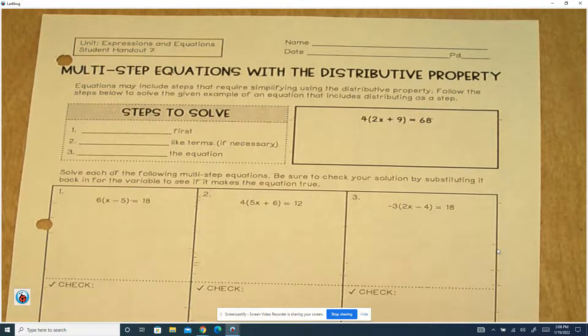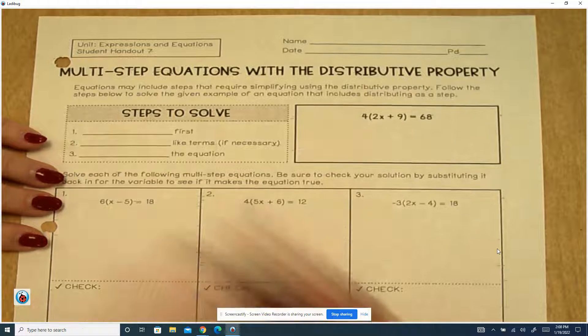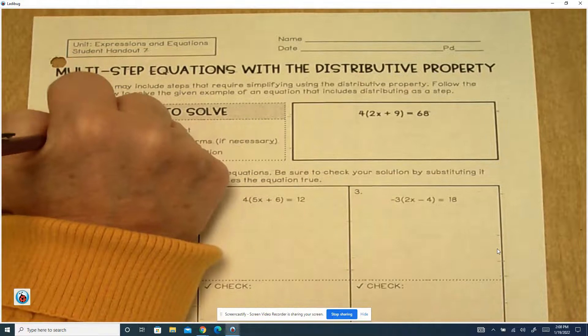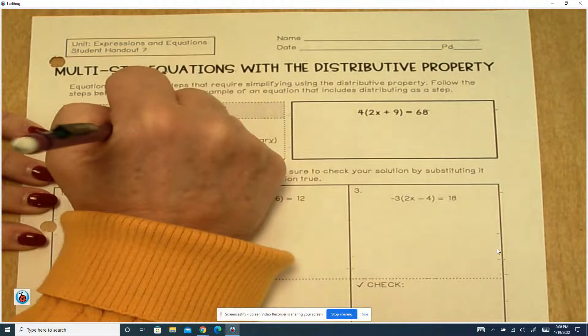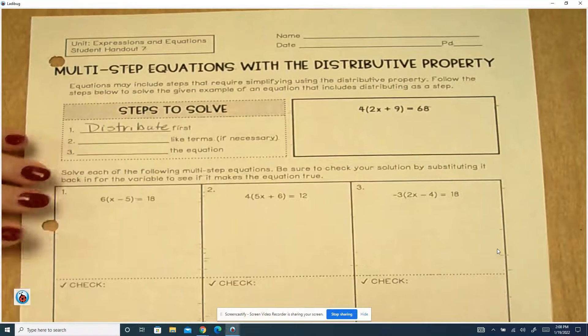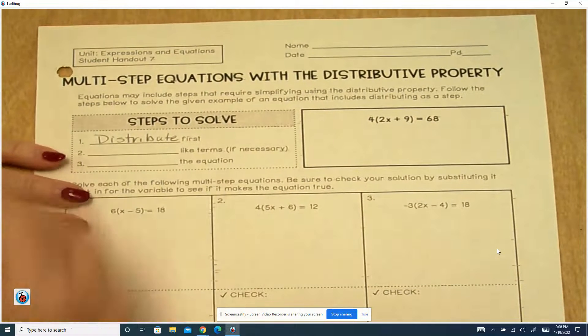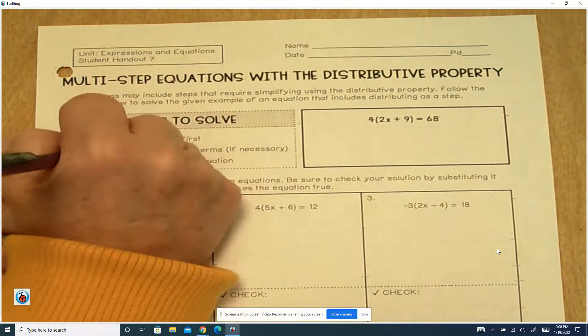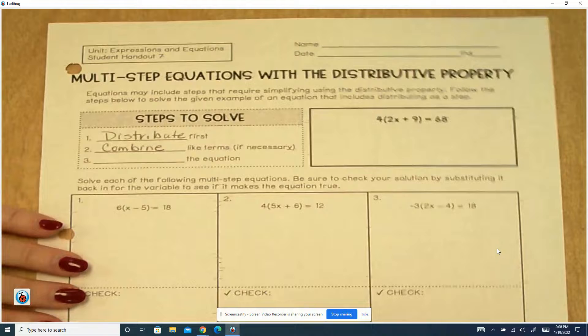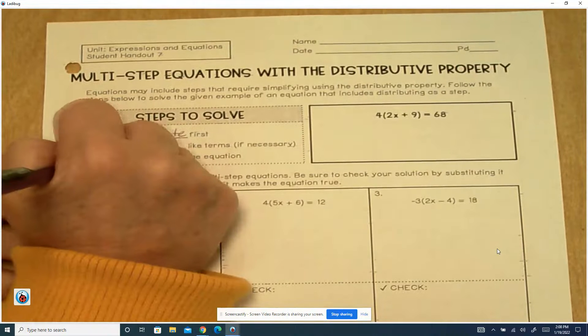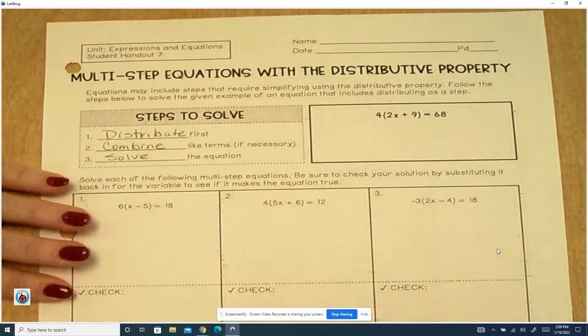Our steps to solve multi-step equations is going to be to distribute first, and then we're going to combine like terms, and then solve the equation.